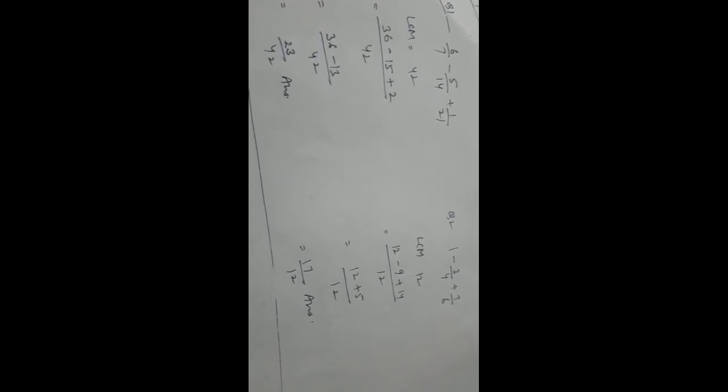In question number 2, 1 has no denominator, so we will take 1 as the automatic denominator. LCM of 1, 4 and 6 would be 12. Dealing the LCM with the numerators, 12 minus 9 plus 14 by 12 would be there. 12 plus 5 by 12. Answer would be 17 by 12.